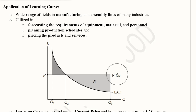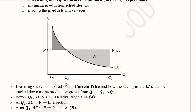A graph shows price and long-run average cost (LRAC) on the y-axis and output Q on the x-axis. Price is fixed (horizontal line). The LRAC curve is negatively sloped. Before output level Q2, the LRAC is above price — not a favorable region. At Q2, price and LRAC intersect. Beyond Q2 through Q3 and onwards, price exceeds LRAC, generating profits. Knowing the learning curve effect allows us to identify this breakeven point Q2 and the favorable region.